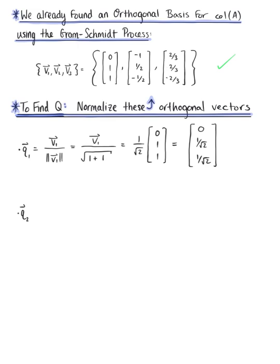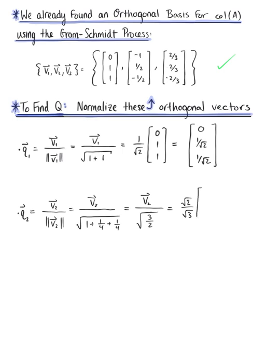Now we need to find vector Q sub 2 by normalizing vector V sub 2. We have V sub 2 divided by its length, which is the square root of 1 plus one-fourth plus one-fourth, equal to the square root of 3 halves. Simplifying, this becomes the square root of 2 over the square root of 3, multiplied by vector V sub 2, with components negative 1, one-half, negative one-half. Distributing gives us the vector with components negative √(2/3), √2 over 2√3, and negative √2 over 2√3.